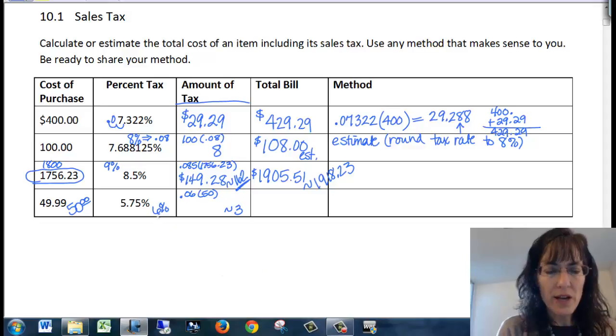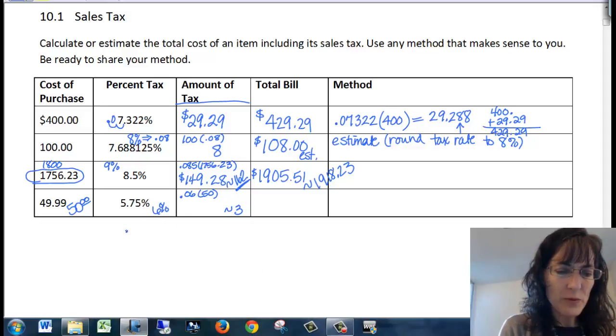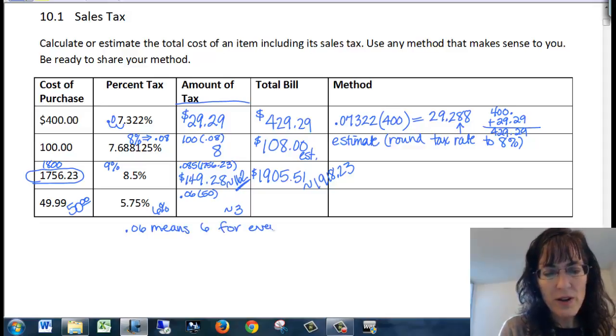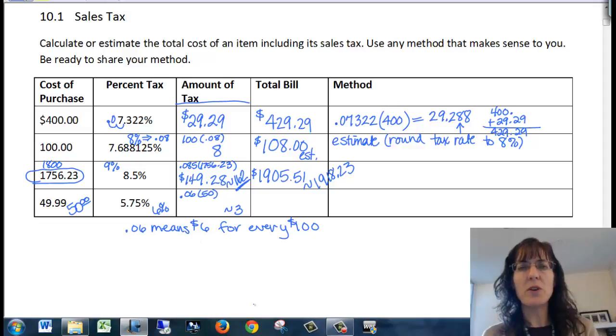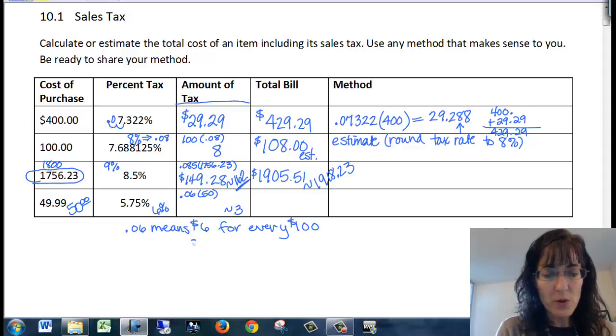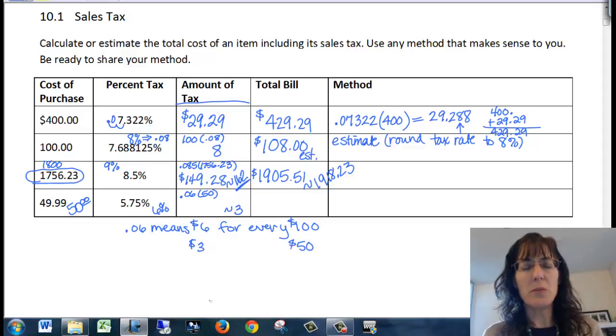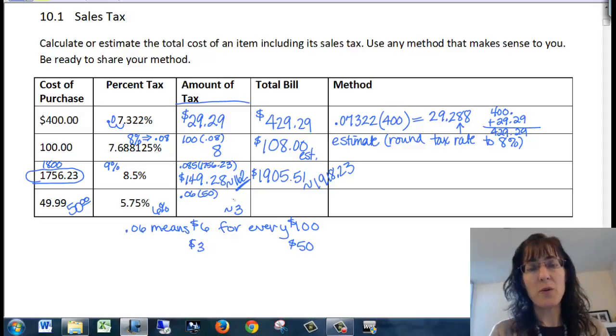There's another way I can find that. If 0.06 means 6 for every $100, you would have $6 in tax for every $100. But I've only got 50, so that must mean I need 3 for every $50. I just divided both of them in half. So I could have come up with it that way as well.